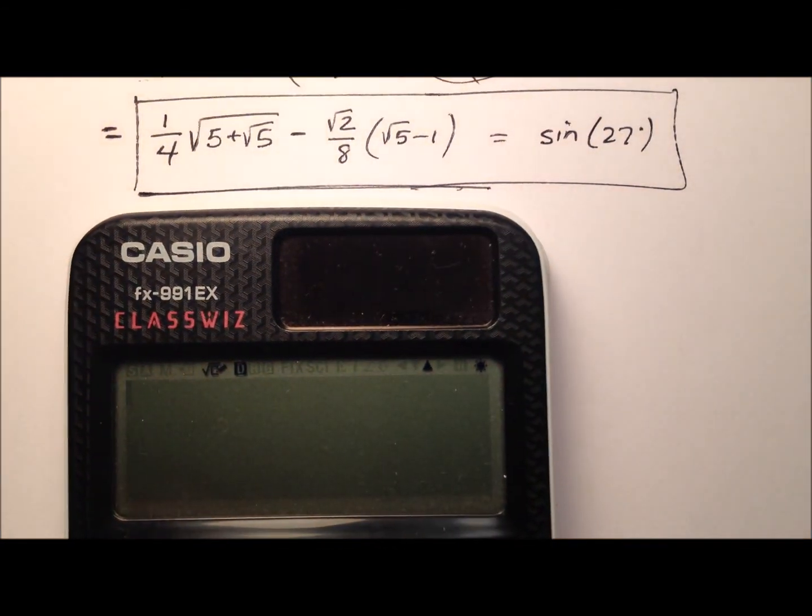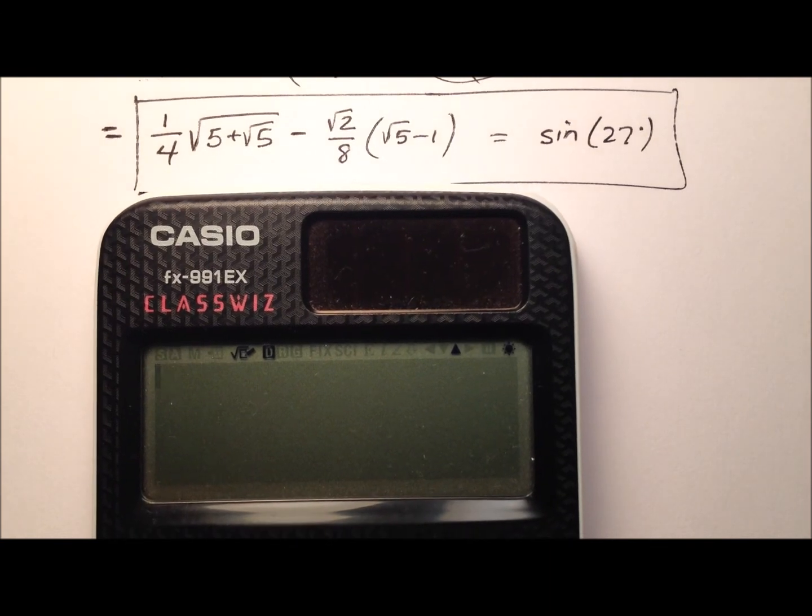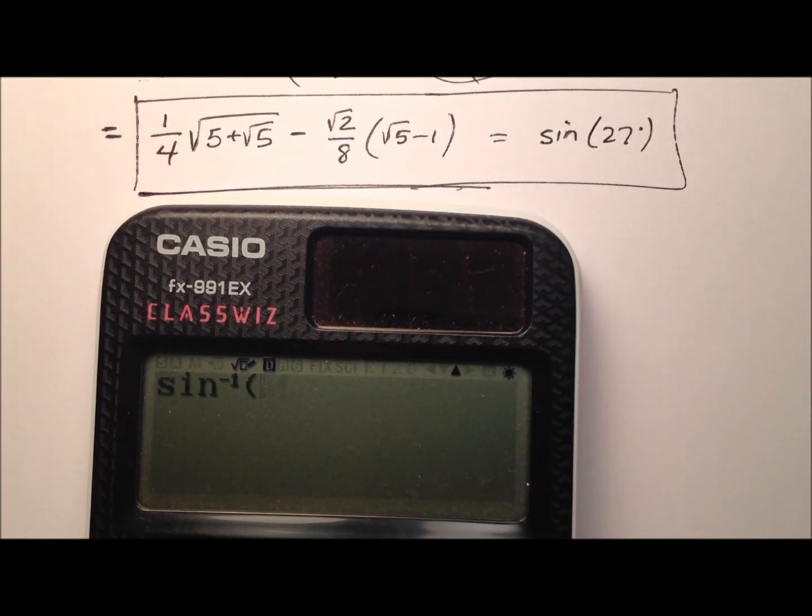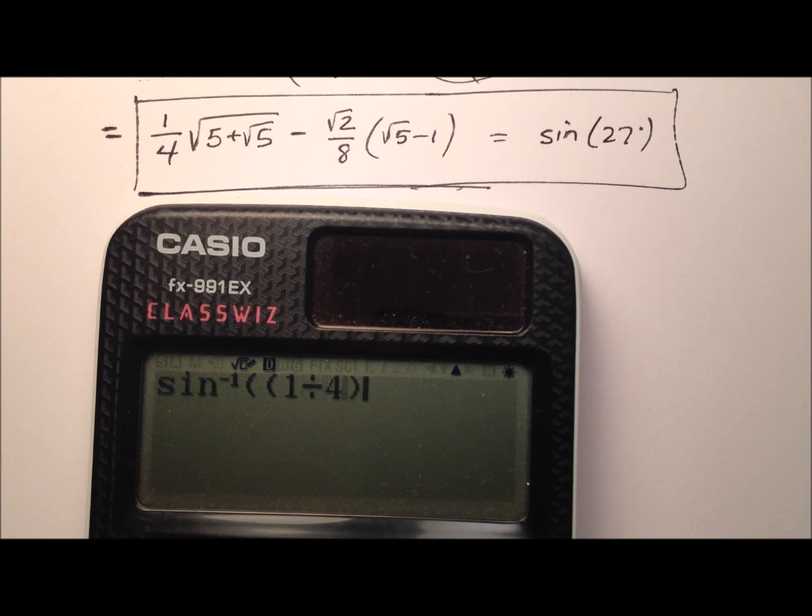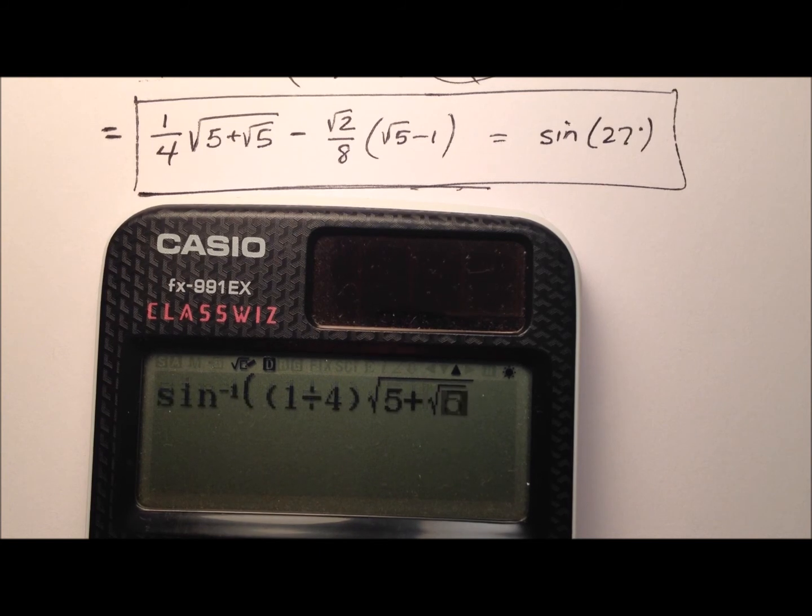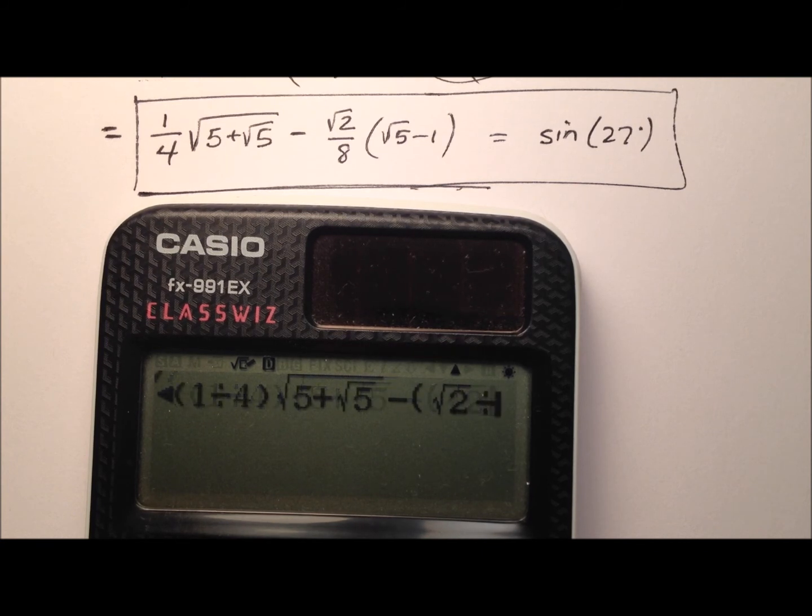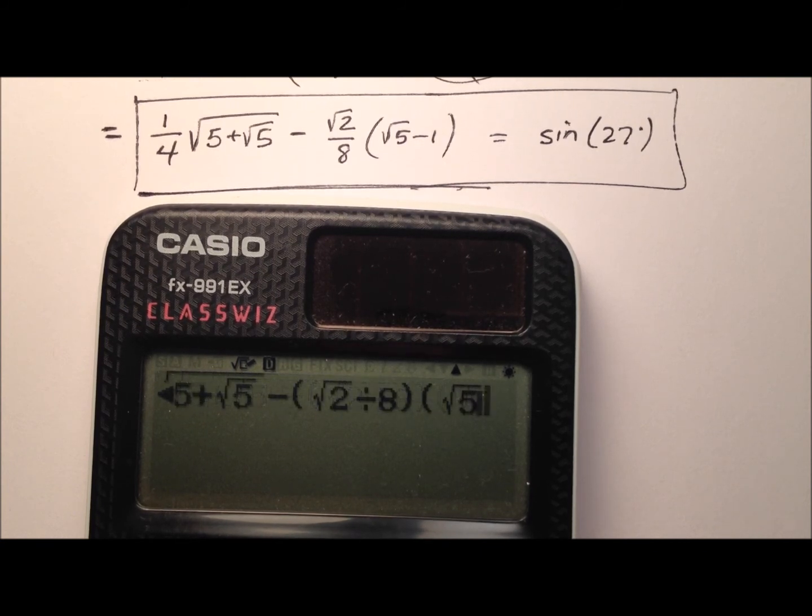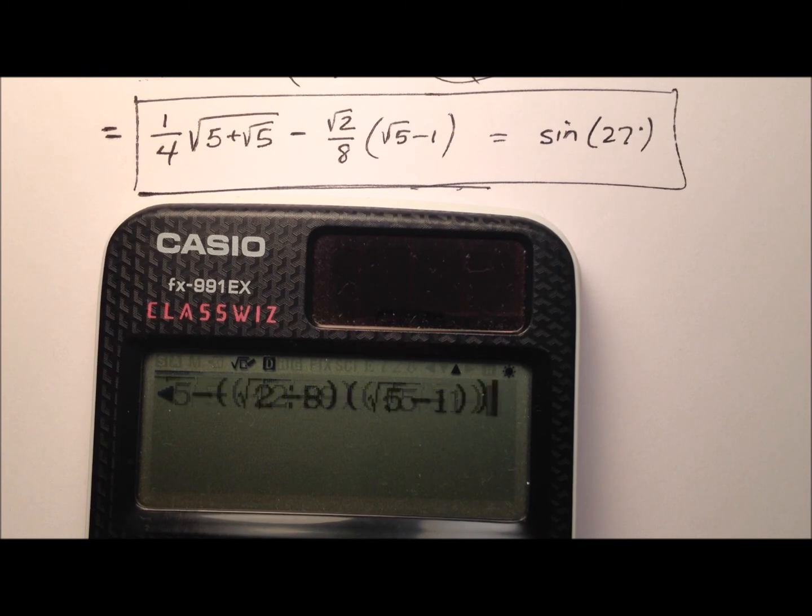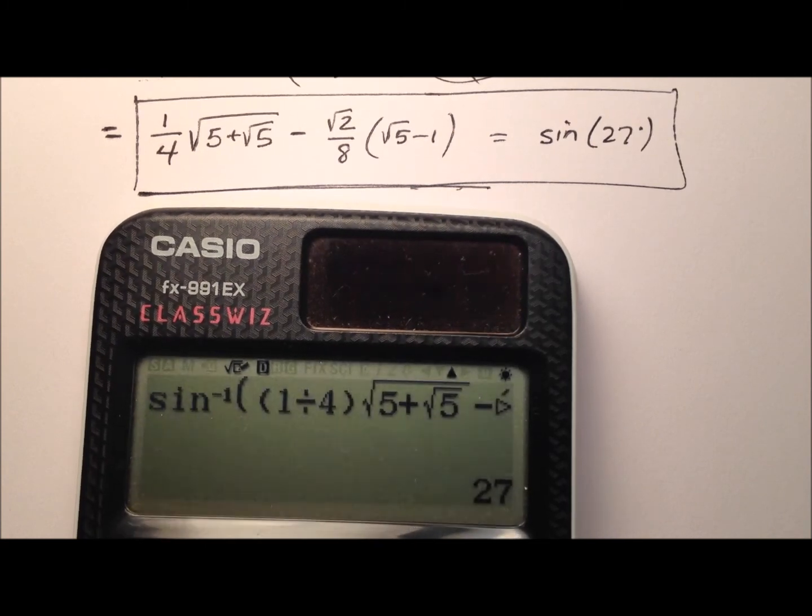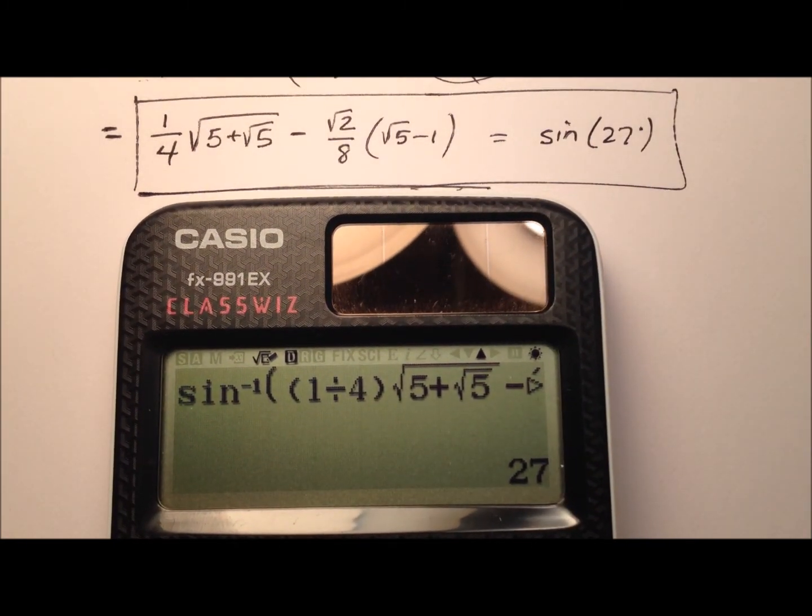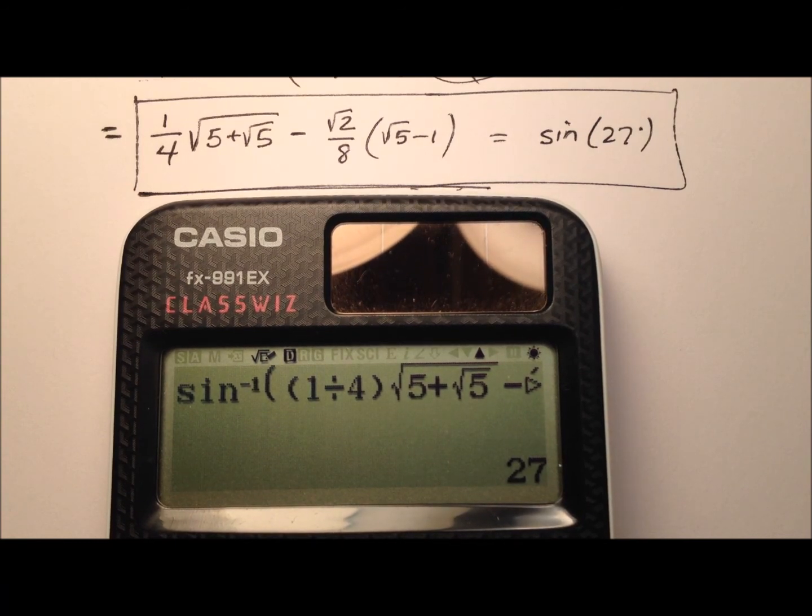Here's our calculator. Let's do the inverse sine and put this ratio in. We'll start with the 1 fourth and multiply that by this square root expression, then subtract the square root of 2 divided by 8, and multiply that by the square root of 5 minus 1. Close everything up, and we get 27 degrees. So that works just fine for our ratio.